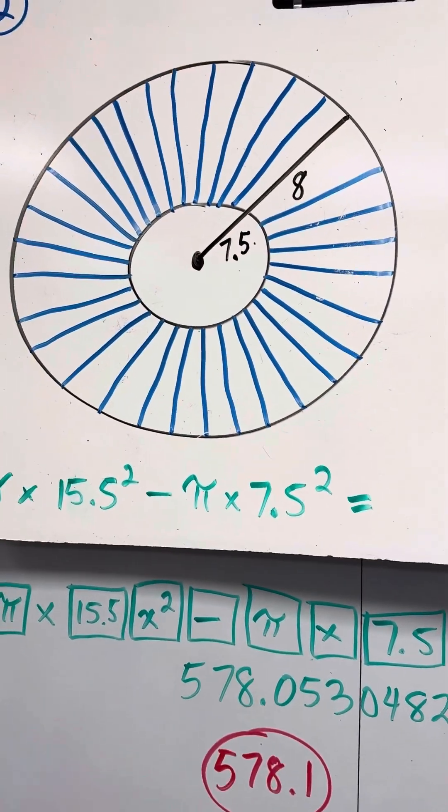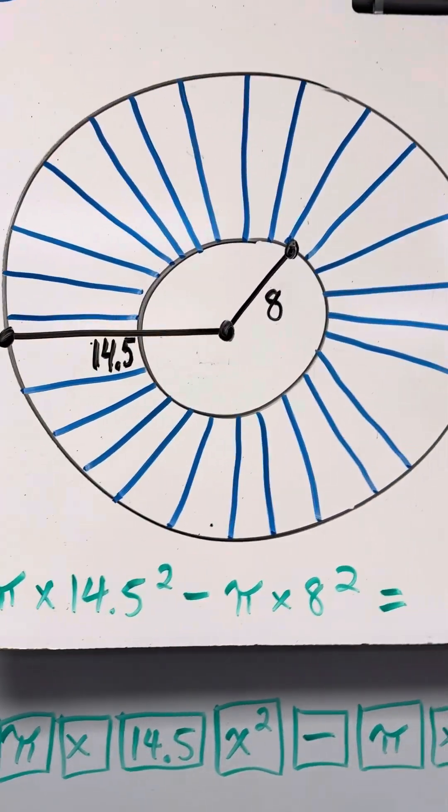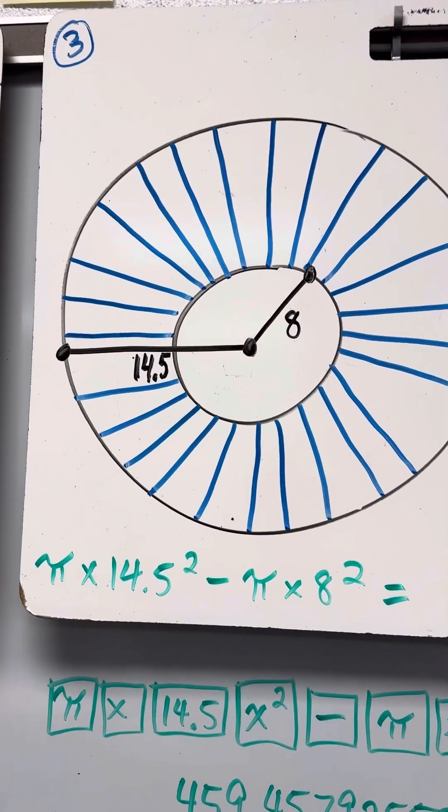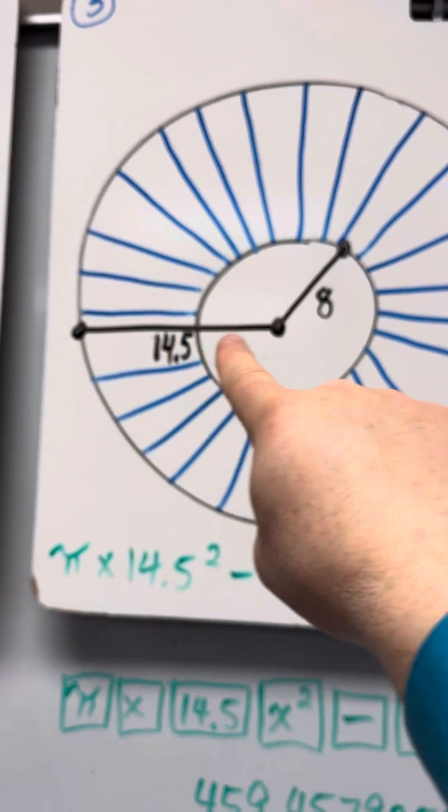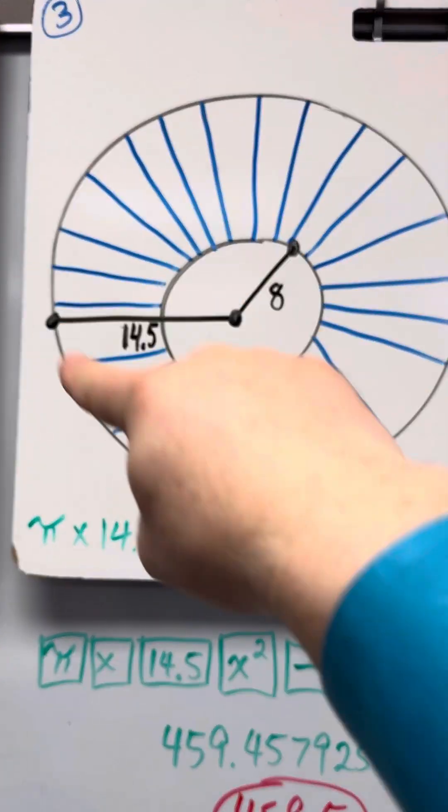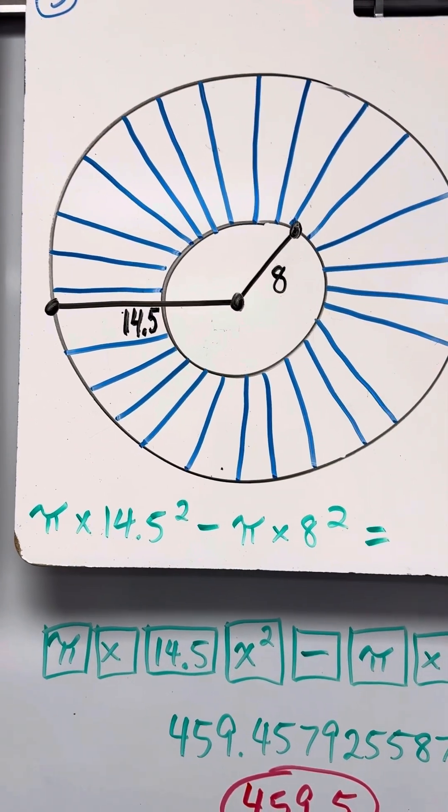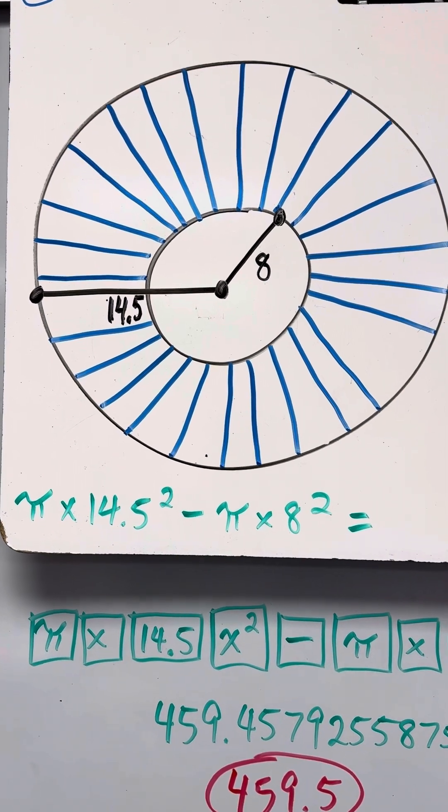Now, some of your problems will look, instead of this, it will look like this. In this case, it just gives you this, which means the whole radius for the big circle is 14.5, and the little radius is 8. So you just use those two numbers.